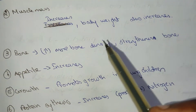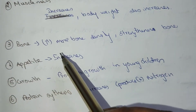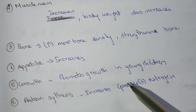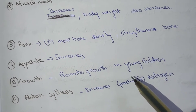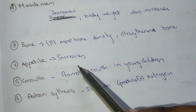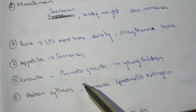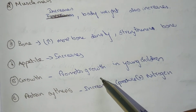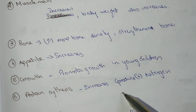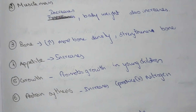Muscle mass increases, body weight increases, bone density increases, and bones are strengthened. Appetite also increases. Growth is promoted in young children. Protein synthesis increases and produces a positive nitrogen effect.